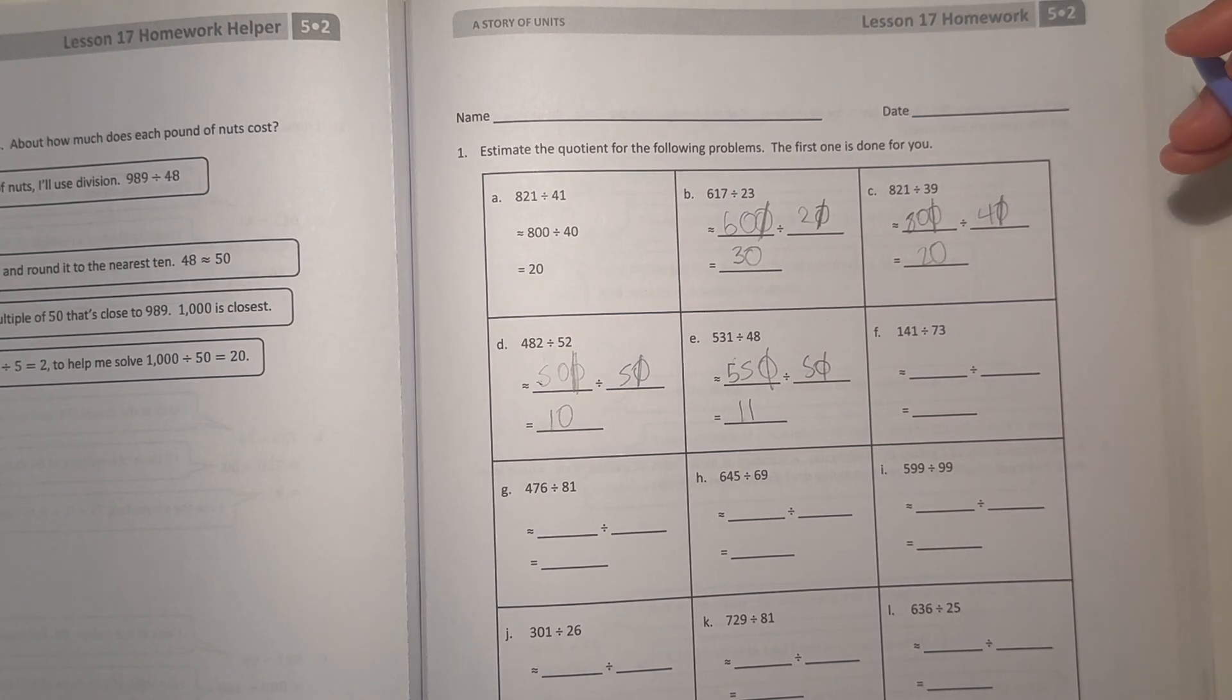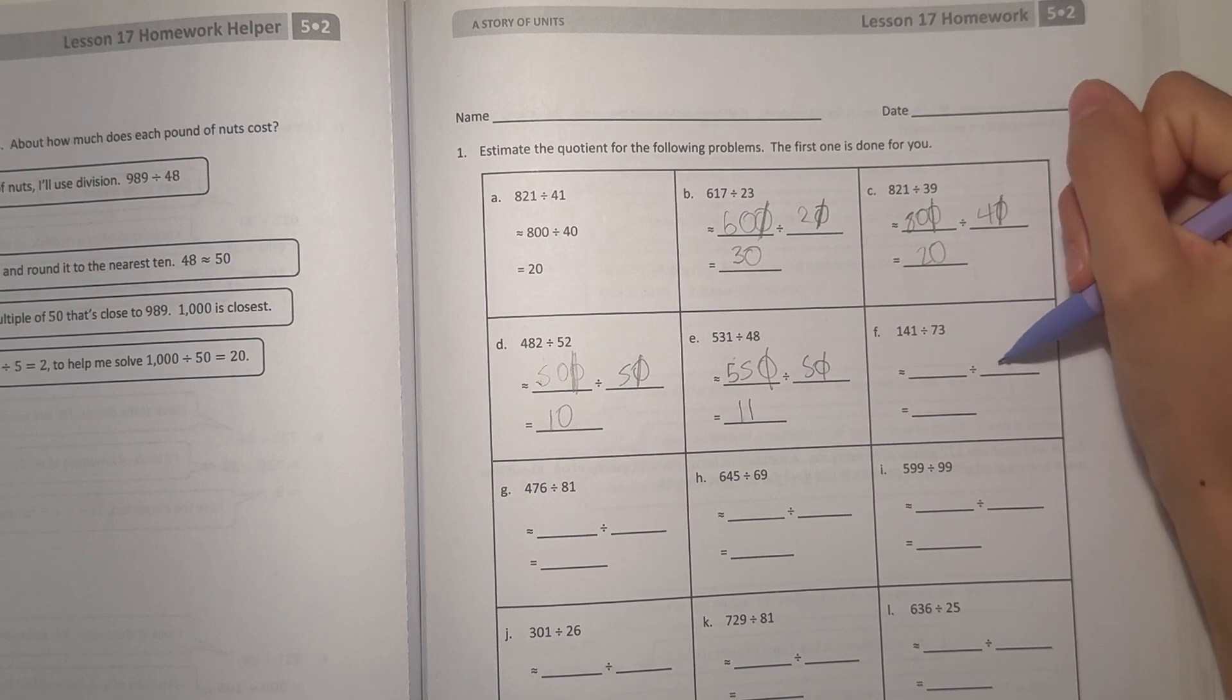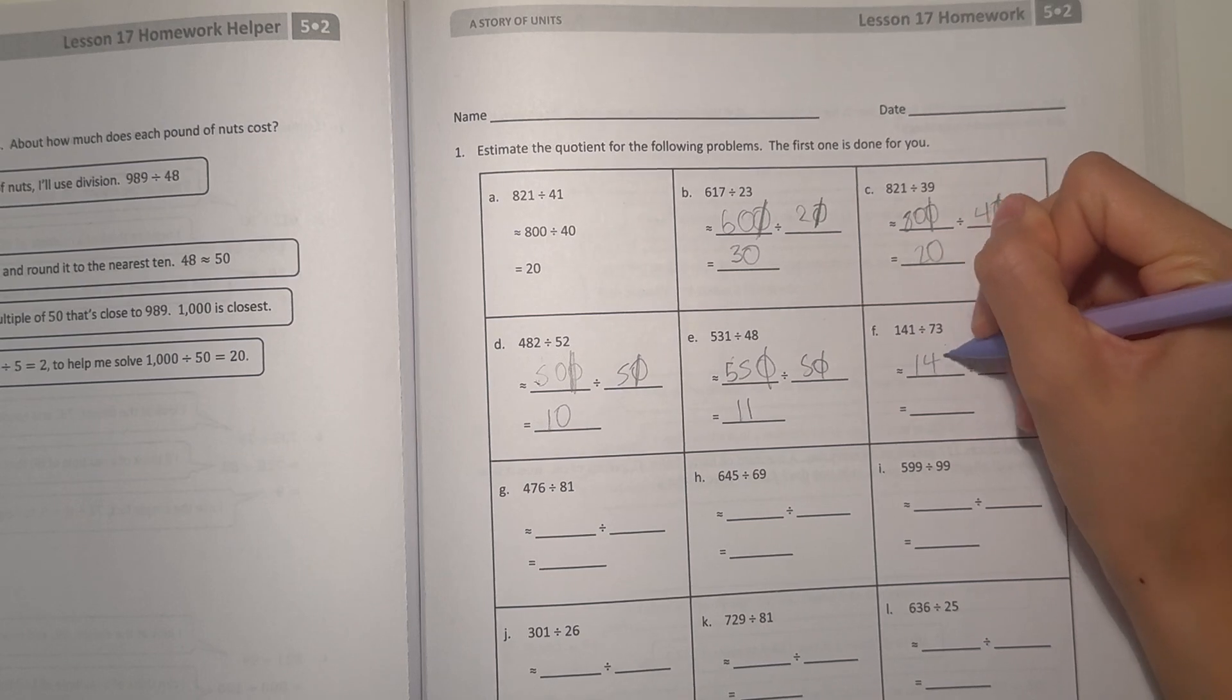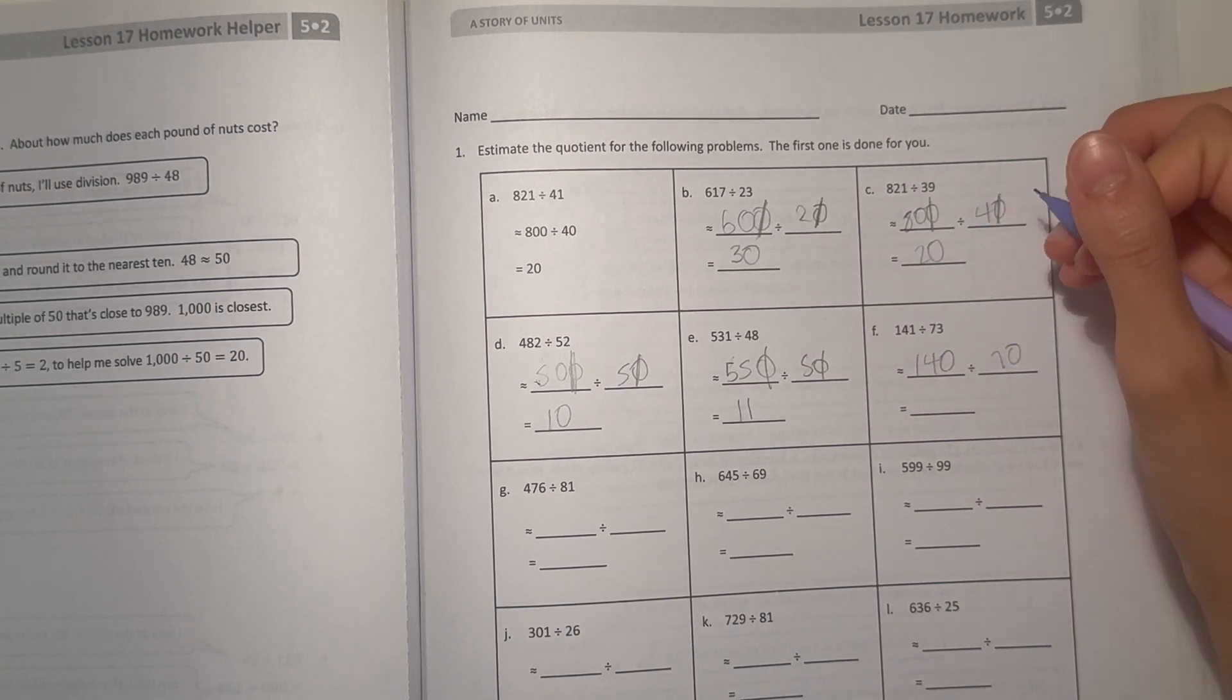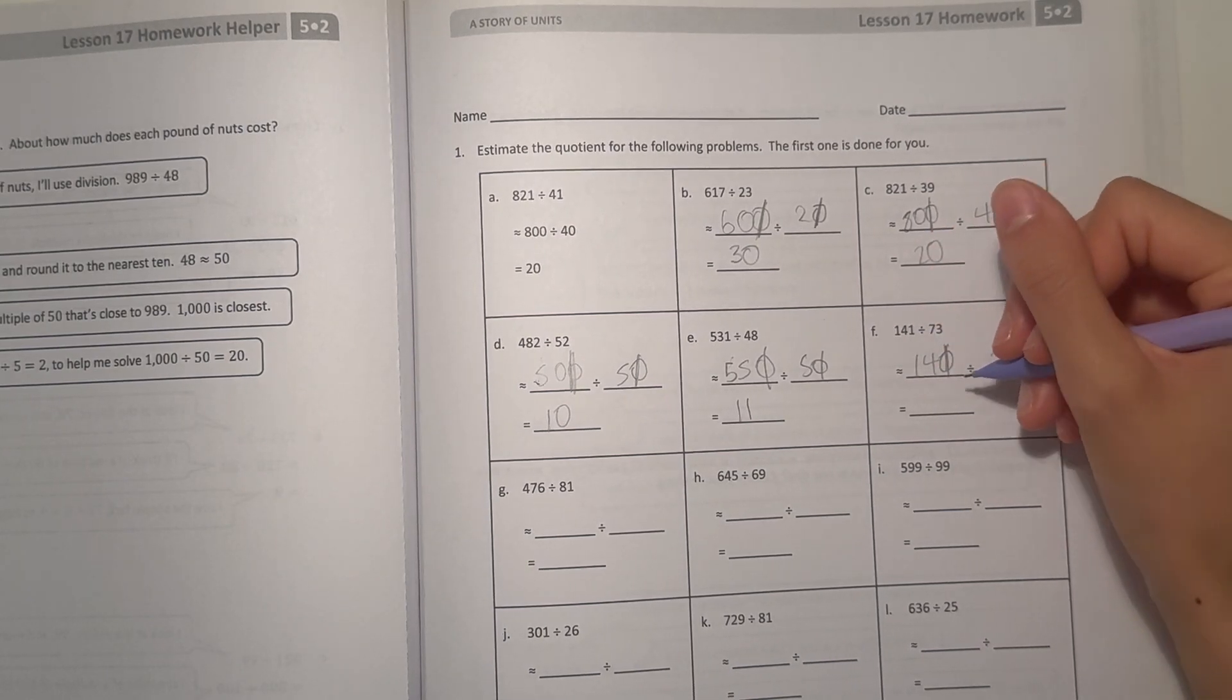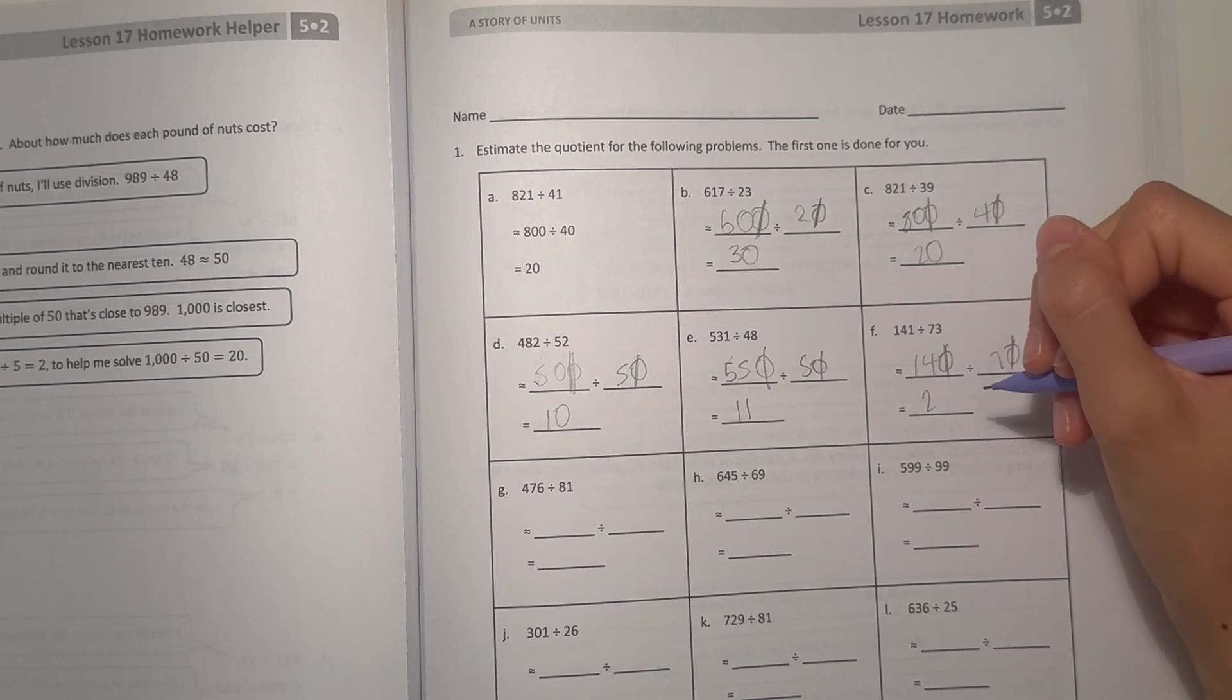All right, and F, 141 divided by 73. 73 rounds to 70. And let's see, 141, 140, seventy can go into that number. So that would be an easy number to divide by. Cross off the zeros, 14 divided by 7 is 2, so 2 is our estimate.